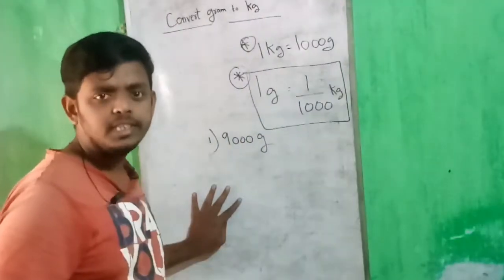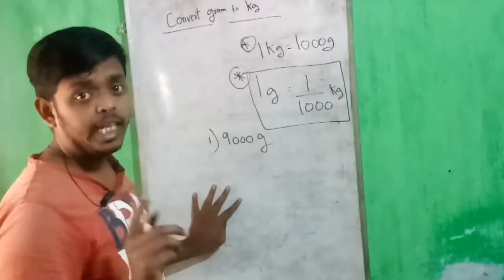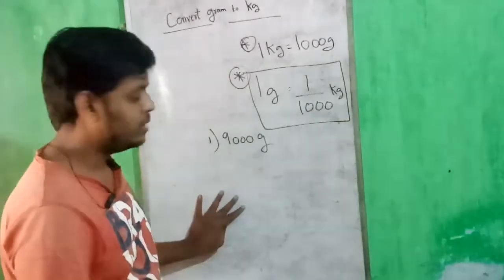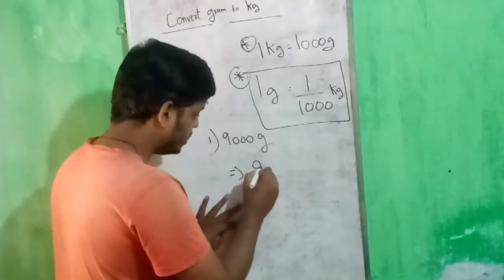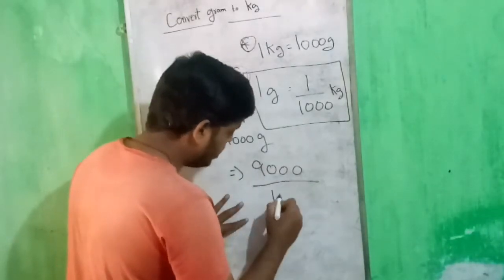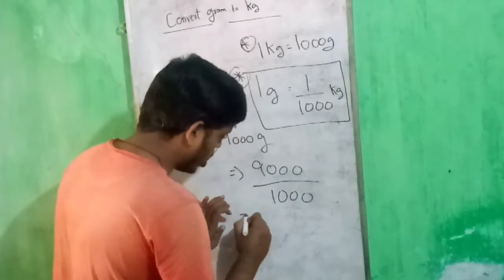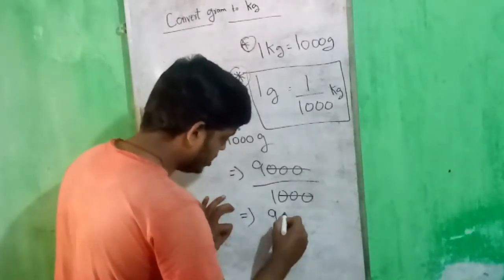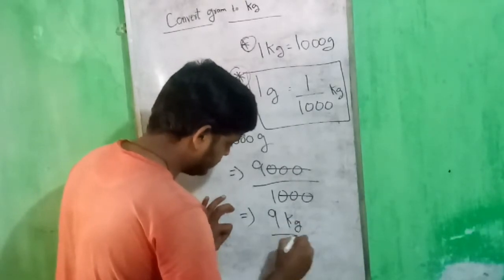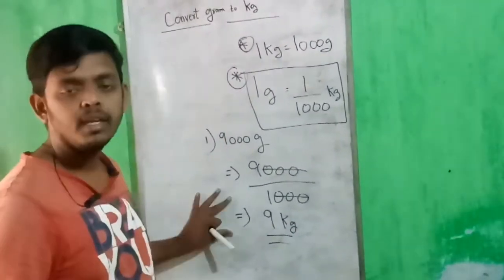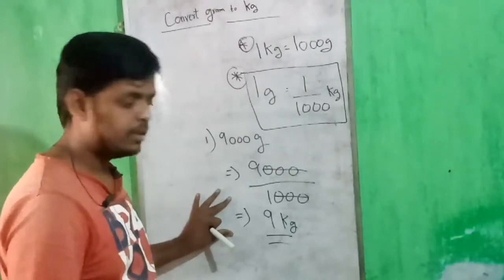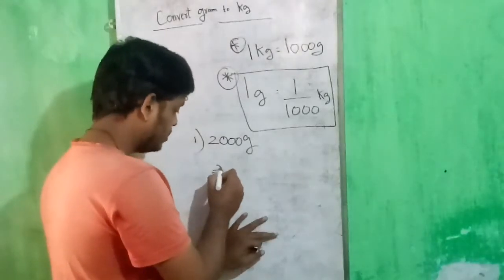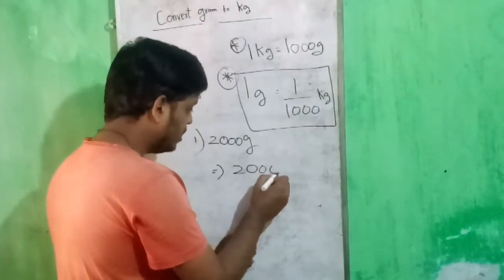Here is a question: convert 9000 grams into kg. What we have to do is divide 9000 by 1000. The zeros cancel and you get 9 kg.